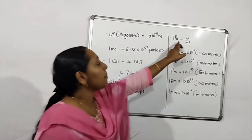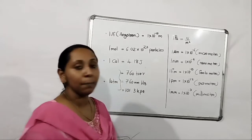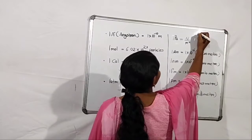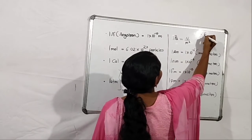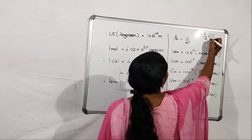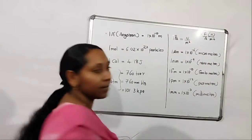Next one, 1 pascal. Pascal is the unit equal to Newton per meter square. Pascal is the unit of pressure. Pressure equal to force by area. So force unit is Newton, area unit is meter square. That is the reason pressure unit is pascal.